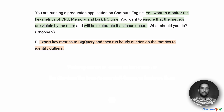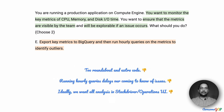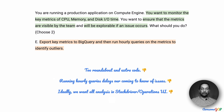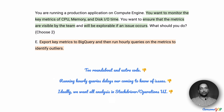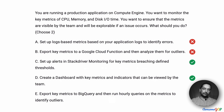Option E suggests exporting key metrics to BigQuery and then running hourly queries on the metrics to identify outliers. This has a similar problem to option B — it's just too roundabout and requires extra code. Moreover, this approach runs queries every hour, which means that even if it worked and we got the notifications, it would be well after the fact of some issue occurring. For all those reasons, we eliminate option E. This leaves us with only two good options — C and D — and those are the ones we choose as the right answer for this requirement.